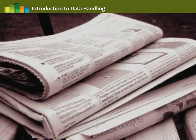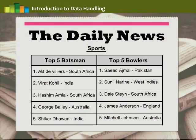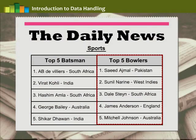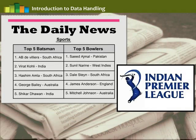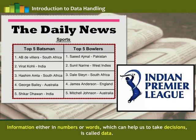For example, if you look at a newspaper you may find tables in the sports column showing top five batsmen and top five bowlers in the world. Have you thought if this information can help someone? Maybe this information can help organizers decide which players to pick first in their IPL team. Such information, either in numbers or words, which can help us to take decisions is called data.